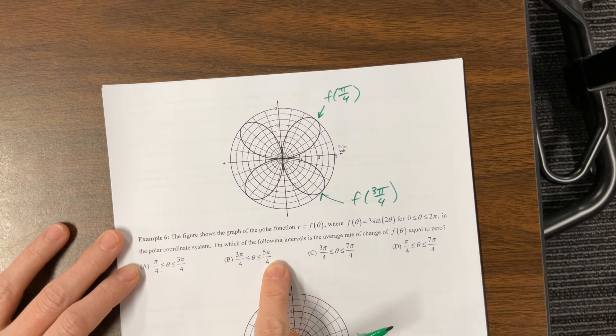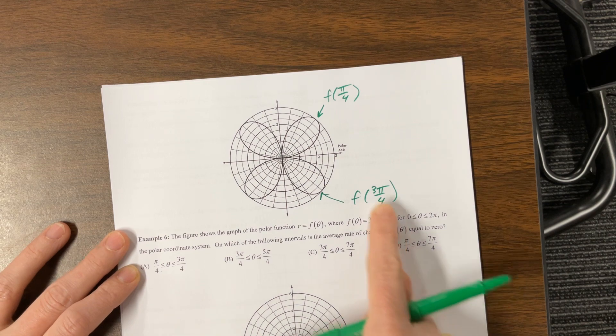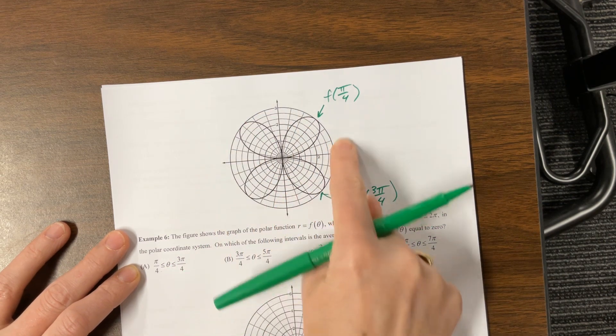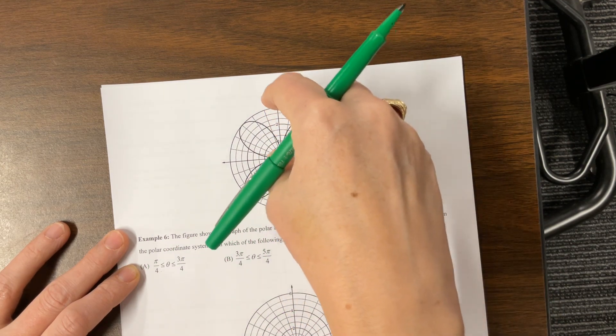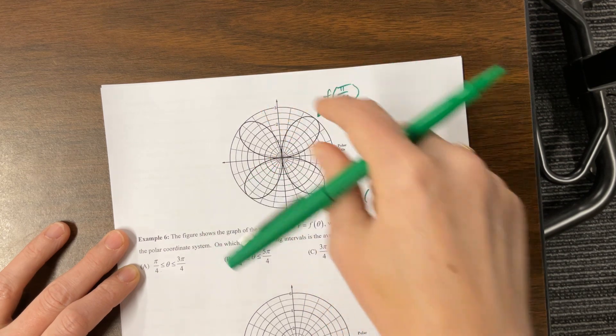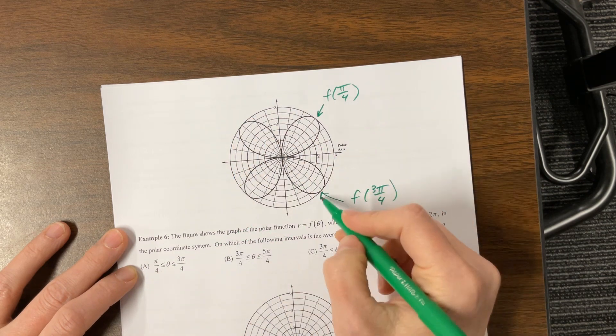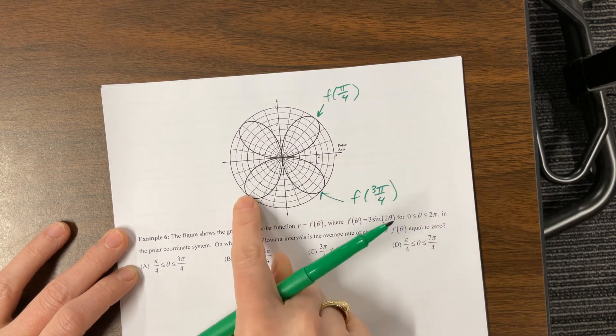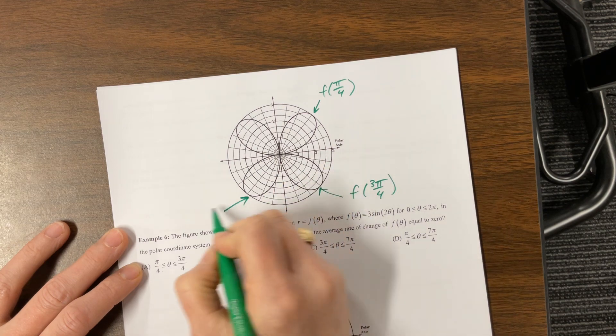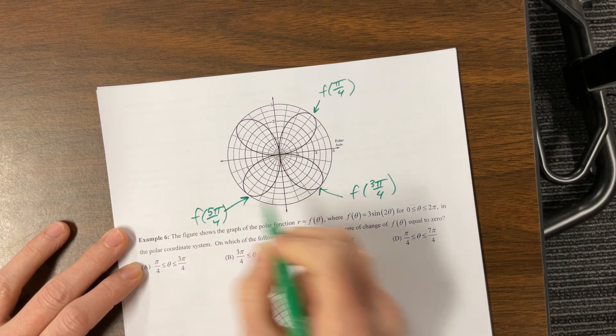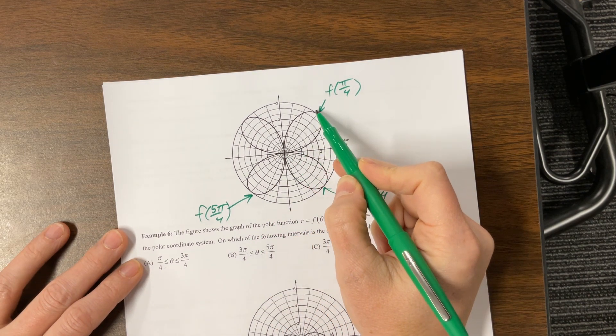2 times 5 pi over 4 gives us 5 pi over 2, so this is 1 pi over 2, 2 pi over 2, 3 pi over 2, 4 pi over 2, 5 pi over 2. Sine of 5 pi over 2 is equal to 1, times 3 is 3. So at this one, 5 pi over 4 is here, and we end up going, oh no, 5 pi over 4 is here. 5 pi over 4 is here, we have a radius of positive 3, so this is now where we are, f of 5 pi over 4. So we started here, we went up to this pi over 4, then we came down around.